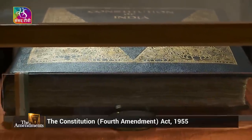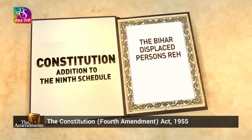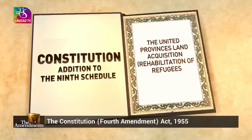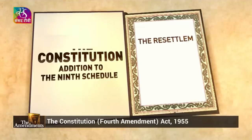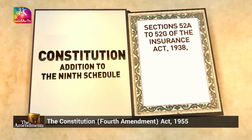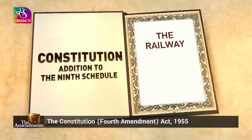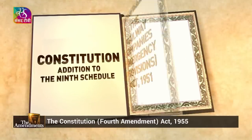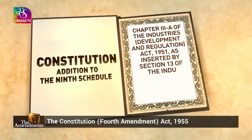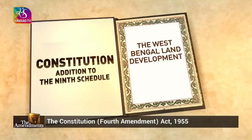In the Ninth Schedule to the Constitution, after Entry 13, the entries added were: The Bihar Displaced Persons Rehabilitation Acquisition of Land Act, 1950; The United Provinces Land Acquisition Rehabilitation of Refugees Act, 1948; The Resettlement of Displaced Persons Land Acquisition Act, 1948; Sections 52a to 52g of the Insurance Act, 1938, as inserted by Section 42 of the Insurance Amendment Act, 1950; The Railway Company's Emergency Provisions Act, 1951; Chapter 3a of the Industries Development and Regulation Act, 1951, as inserted by Section 13 of the Industries Development and Regulation Amendment Act, 1953; and The West Bengal Land Development and Planning Act, 1948.